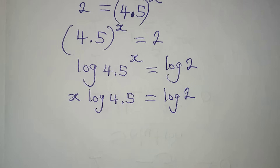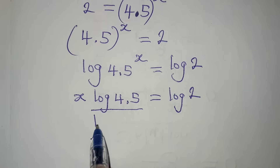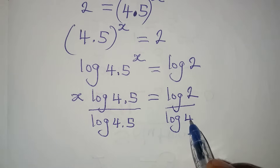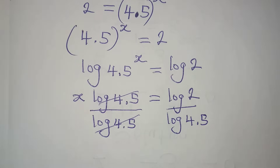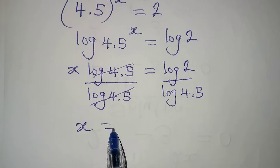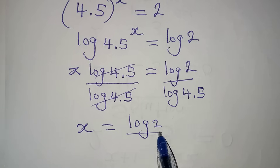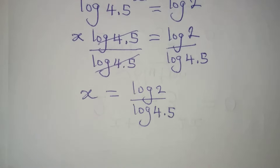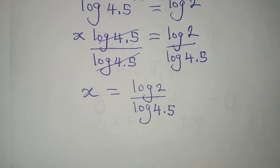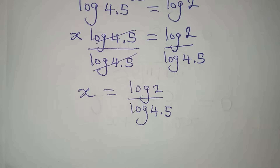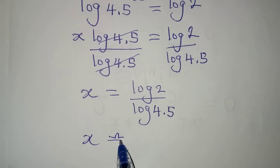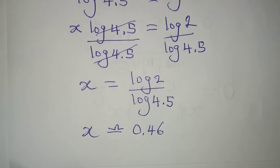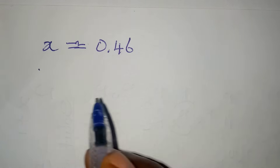We are looking for the value of x, so I need to remove log 4.5. I divide both sides by log 4.5 — they cancel — and x equals log 2 divided by log 4.5. Pressing this on a calculator gives x approximately equal to 0.46.